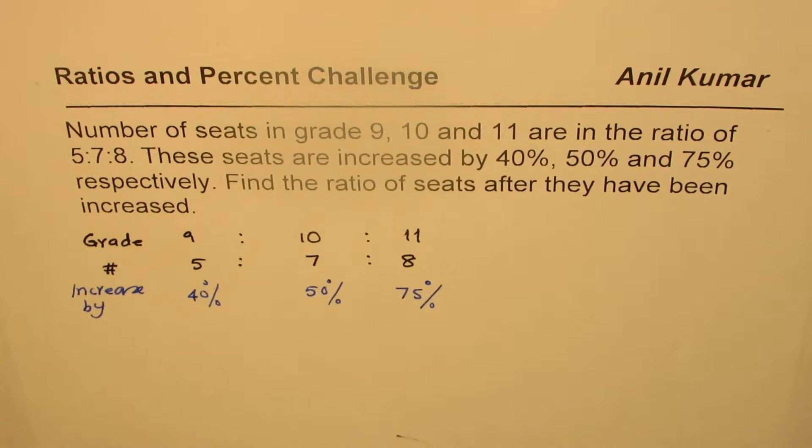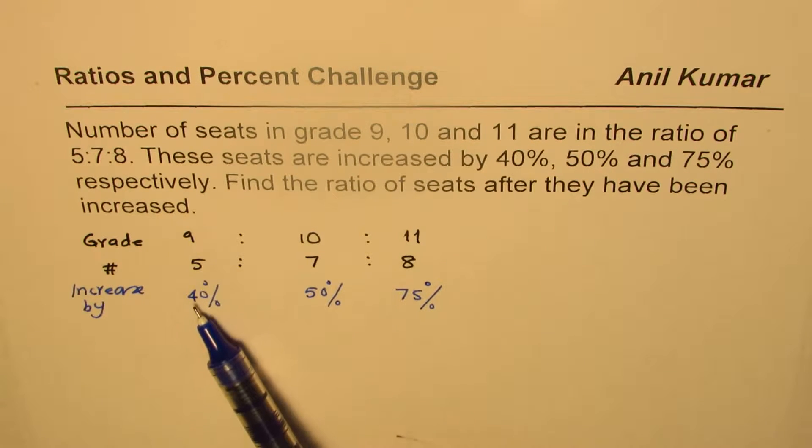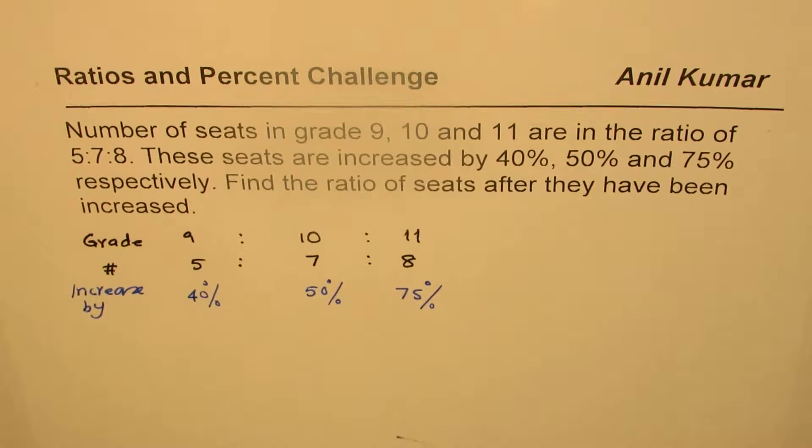For example, if we have 100 students in grade 9, then they become 140, increased by 40% higher. So already plus 50, 40% more. How do you get that number?